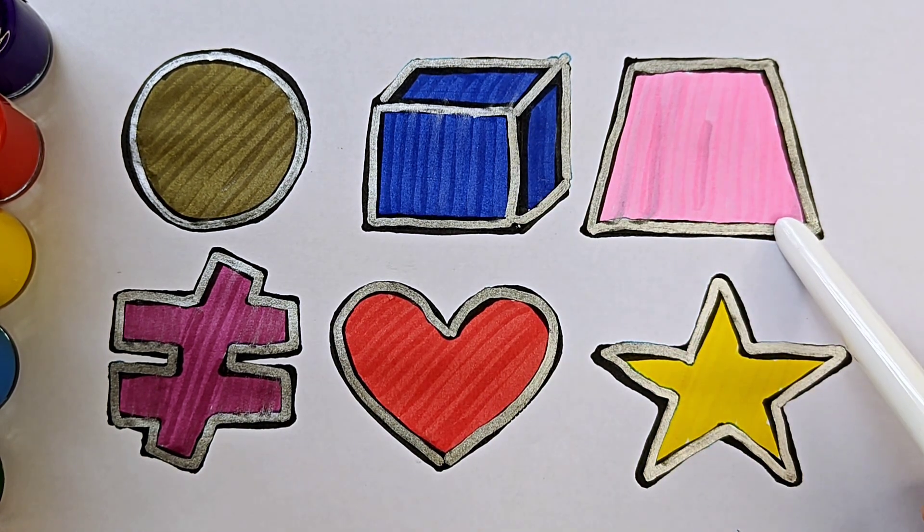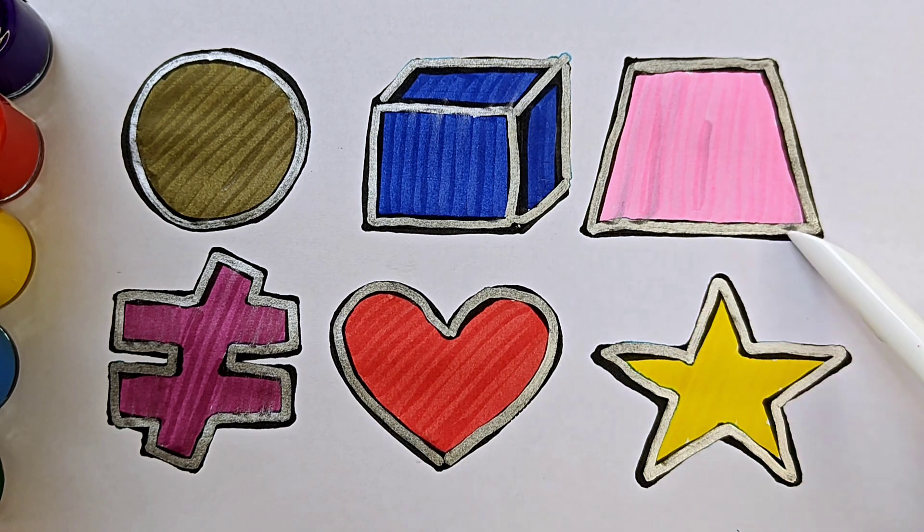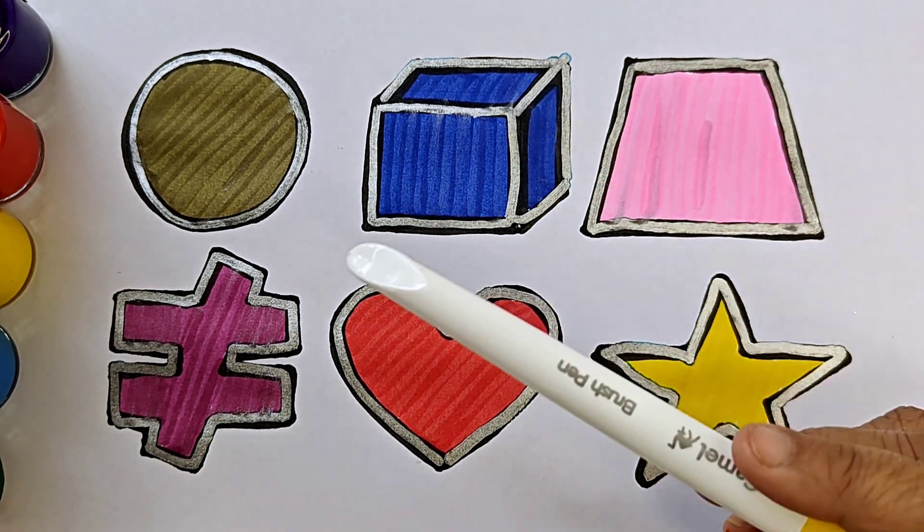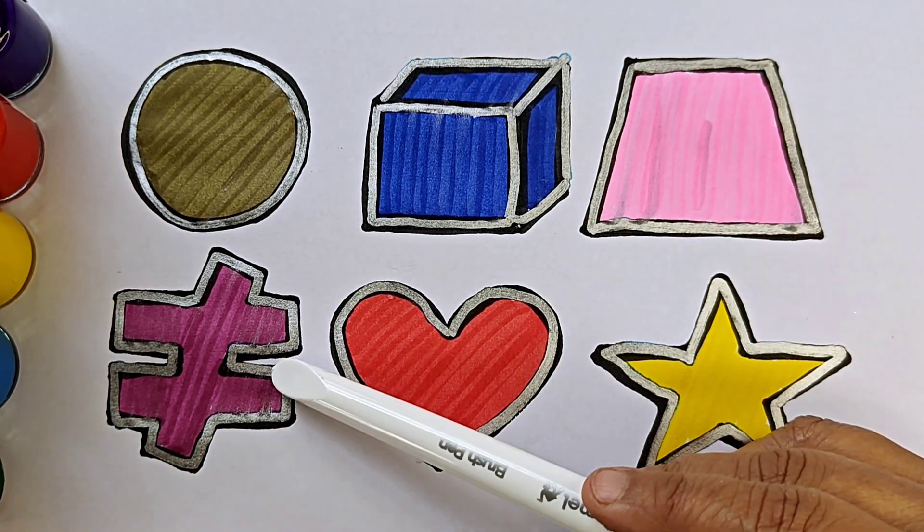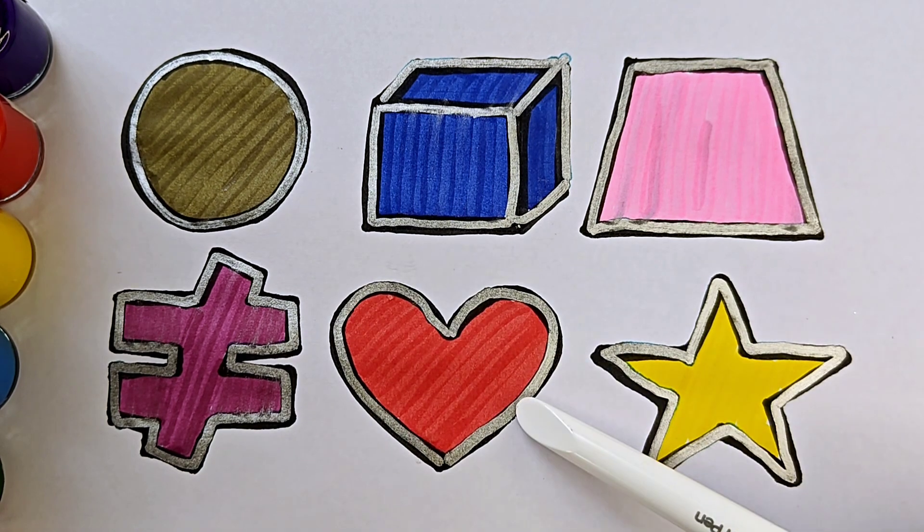3D shape. This is trapezoid. It has four sides. One, two, three, four. Four sides. It is 2D shape. This is not equal to symbol. This is heart. Heart in the shape.